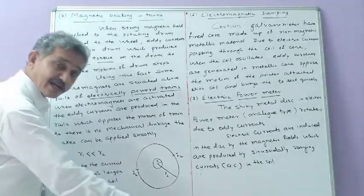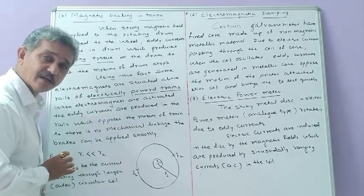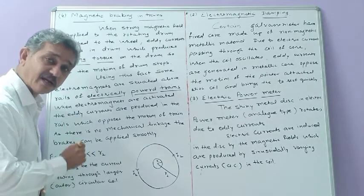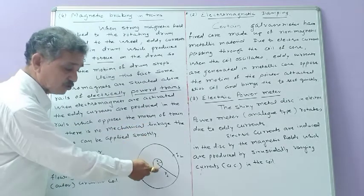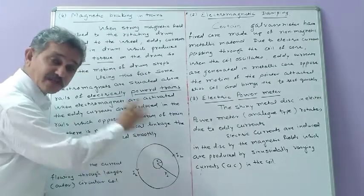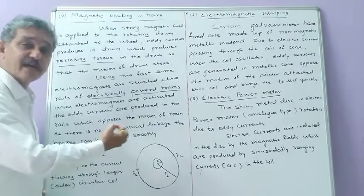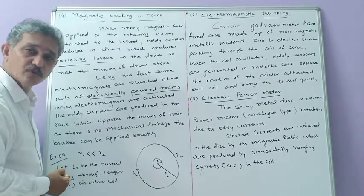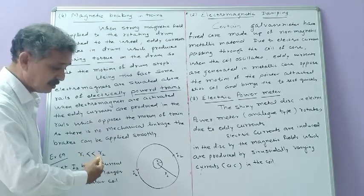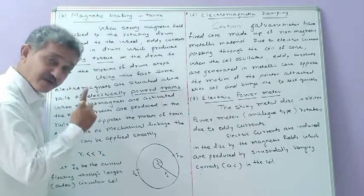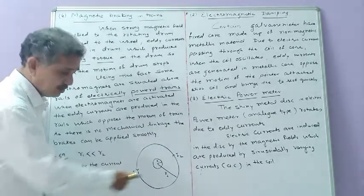To determine the mutual inductance, we pass electric current through one of the coils, determine the magnetic field due to that current, find the magnetic flux linked with the other coil, and divide that flux by the electric current passing through the larger coil. If we say mutual inductance M12, then it is phi1 upon I2. We want to determine M12 first. To do so, we consider electric current passing through the outer conducting ring.